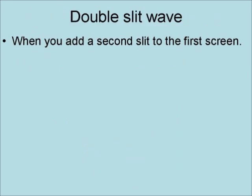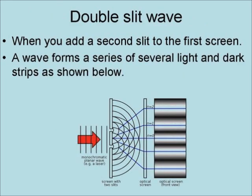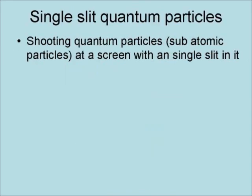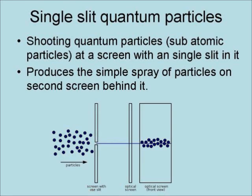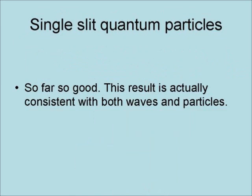When you add a second slit to the first screen, a wave forms a series of several light and dark stripes. Shooting quantum particles — that is, subatomic particles — at a screen with a single slit produces a simple spray of particles on the second screen behind it. This result is actually consistent with both waves and particles.